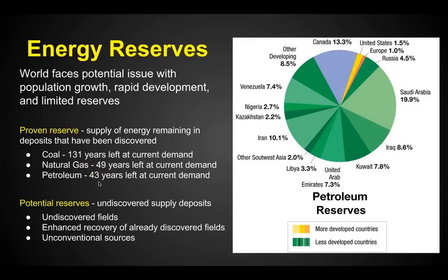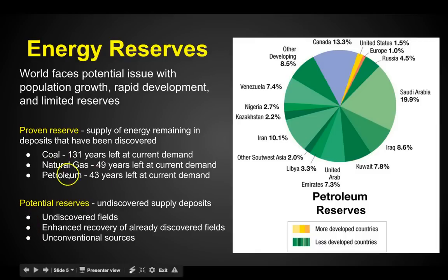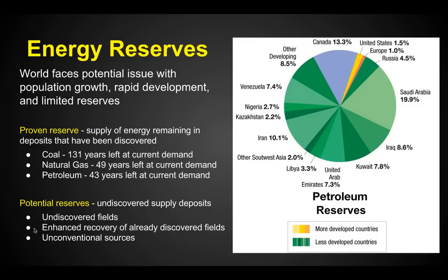I'm hoping we're running on renewable resources such as electric or solar. But this is, at least by Rubenstein's textbook, where we are. So we look for potential reserves — undiscovered supply deposits. If we're about to run out of gas and petroleum, there are still undiscovered fields that hold natural gas and petroleum that we just don't know where they are yet in the earth.